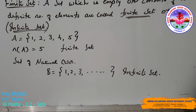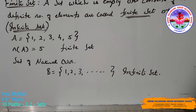The set of natural numbers — 1, 2, 3, and so on — is an infinite set because the elements are not countable. It is not possible to write all the elements of an infinite set within braces because the number of elements is not finite, so we represent some infinite sets in roster form by writing a few elements that clearly indicate the structure, followed by dots. Note that all infinite sets cannot be described in roster form.